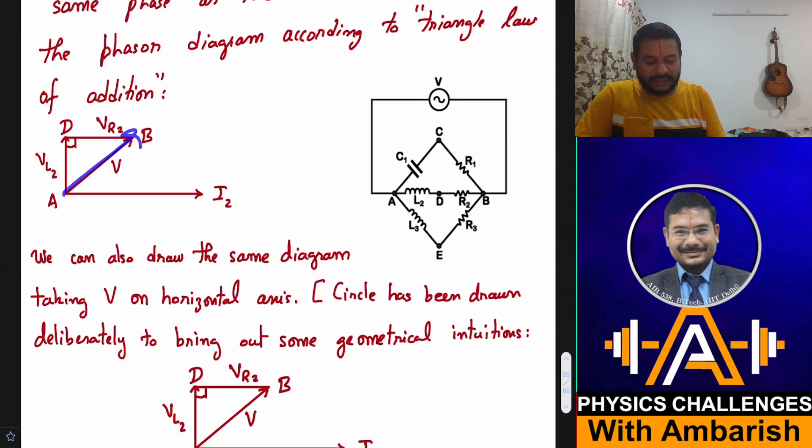Let's say I2 phasor is in this direction. Then VL2 phasor must be at 90 degree to I2, and VR2 phasor must be parallel to I2. Normally we draw the voltage phasor with the common tail in the parallelogram law, but here I have drawn the voltage phasor across R2 according to the triangle law. Now I can also draw the same diagram taking V on the horizontal axis, and I have deliberately drawn a circle to bring out some geometrical intuitions in the problem.